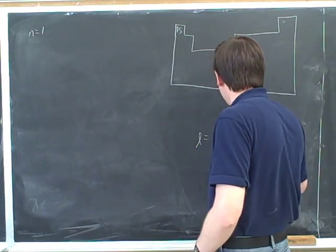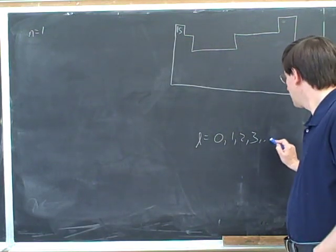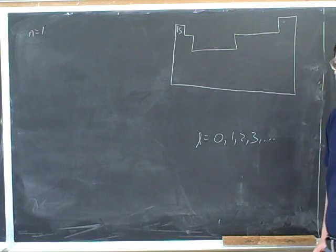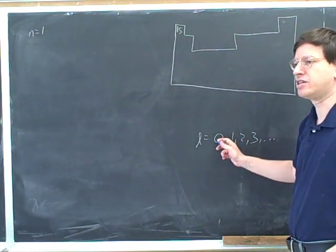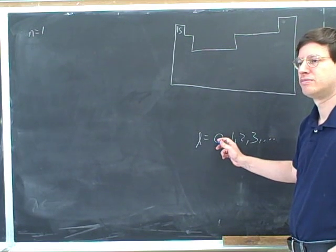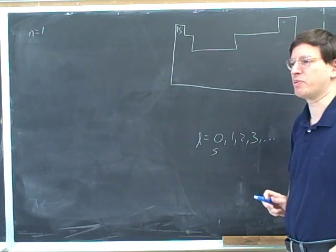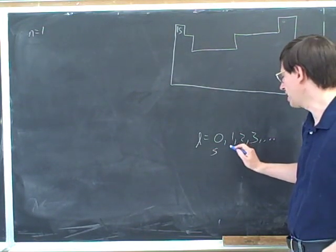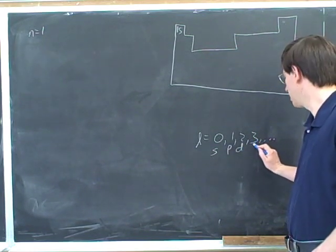And then the next quantum number is called l. And these are the possible l's: 0, 1, 2, 3. Now there's another name for these. What's another name for when l is zero? Another name for when l is zero is the S type orbital. And what's another name for when l is one? P. Yeah. And then this would be D, and this would be F.